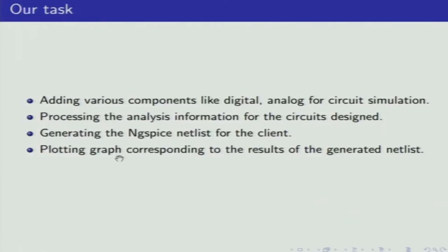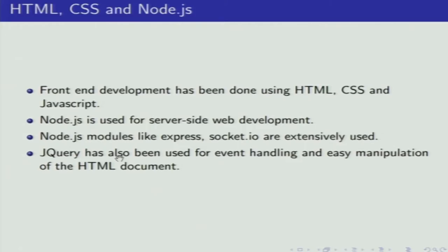We processed the circuits for the analysis information entered by the users. We generated a net list corresponding to the information entered by the user and finally plotted a graph corresponding to the generated net list. On the front end we worked on HTML, CSS and JavaScript, while the server-side development was done using Node.js. Node.js modules like Express and Socket.io were extensively used. jQuery has also been used for image handling and easy manipulation of the HTML document.